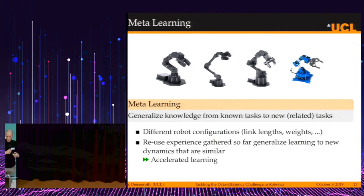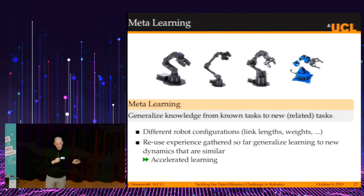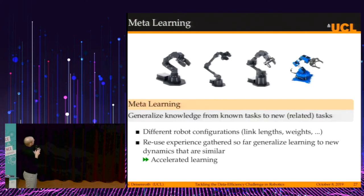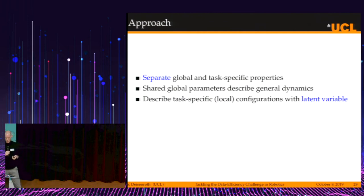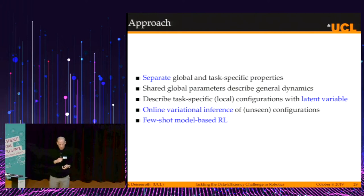The idea is to reuse experience collected so far to generalize learning to new situations and thereby accelerate learning. The approach separates global and task-specific properties. In this setting, the global dynamics of the arm should be shared across robots, but there are robot-specific things like arm weight that change the dynamics. Shared global parameters describe the general dynamics, and task-specific local configurations are described using a latent variable. We use online variational inference to infer unseen configurations, allowing for few-shot model-based reinforcement learning.